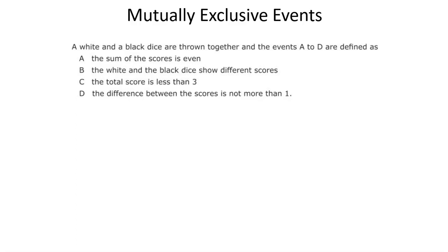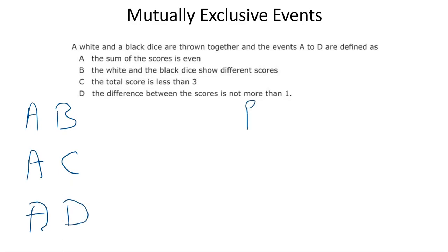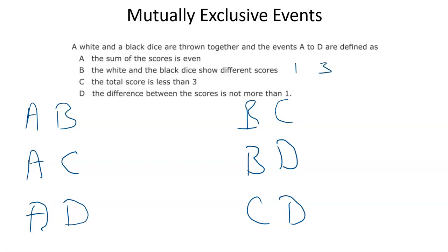So let's have a look at these examples here. A white and a black dice are thrown together, and the events A to D are defined. We're going to look at pairing up these four events in different ways and say: are these mutually exclusive or not? Starting with A and B: the sum of the scores is even, and the white and black dice show different scores. That's perfectly fine — that can happen. For example, the white and black show different scores of one and three, and the sum of these scores is even. So these can both happen at the same time with one roll of both dice, so these are not mutually exclusive.